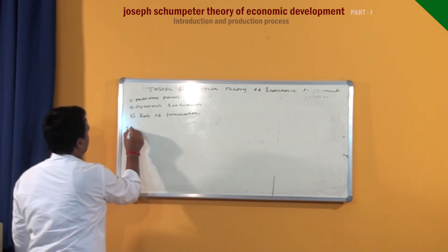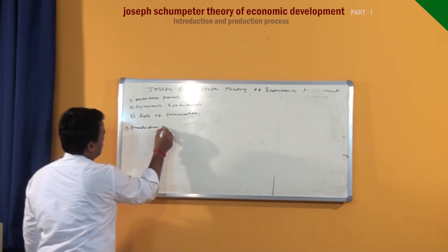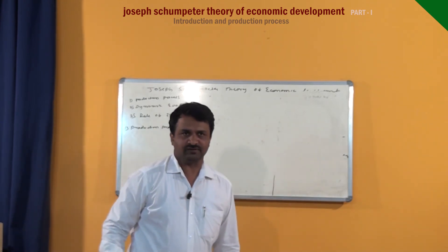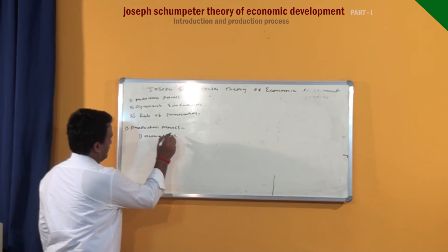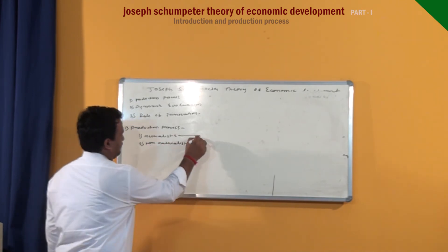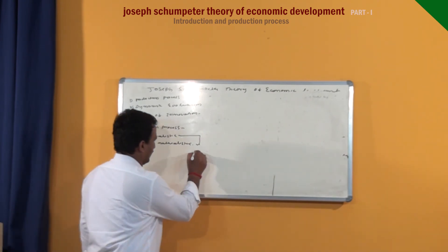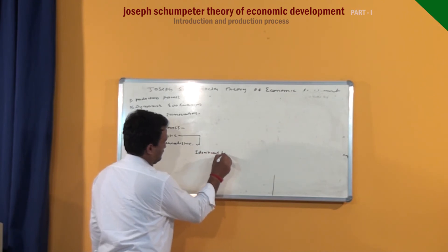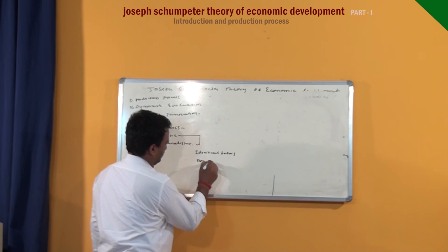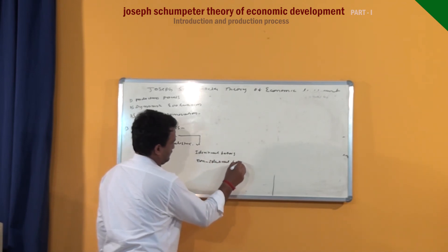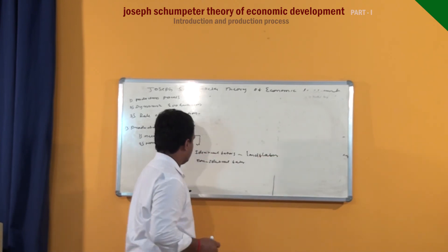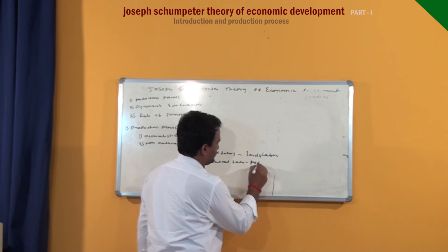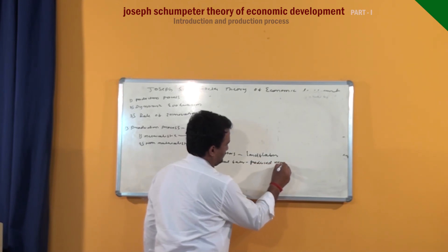First one, the production process. According to him, production process is in both forms: materialistic and non-materialistic. Materialistic factors are identical factors and non-identical factors. Identical factors are land and labor; non-identical factor is produced means of production.